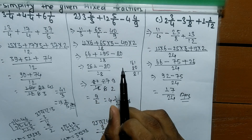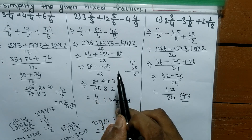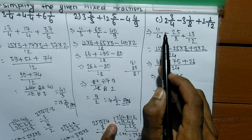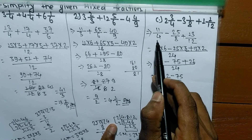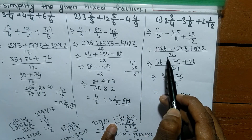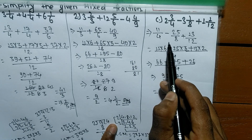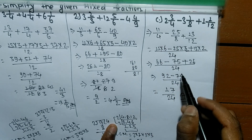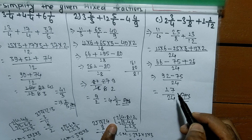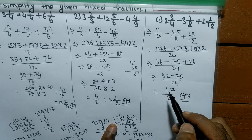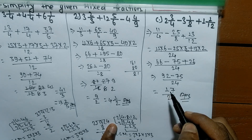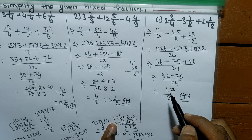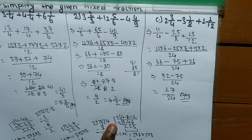In this way we can simplify the given mixed fractions. In the first step we convert the mixed fractions into improper fractions, then take the LCM of denominators, and then solve. If you have any problem regarding math, just comment your question below and we shall provide a video solution. Thank you.